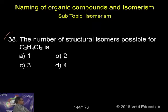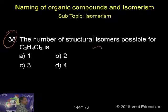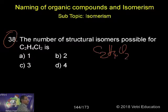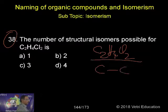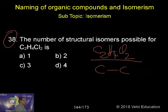Number 38: the number of structural isomers for C₂H₄Cl₂. Only two carbon atoms, so the only probability — that is CH₃ —